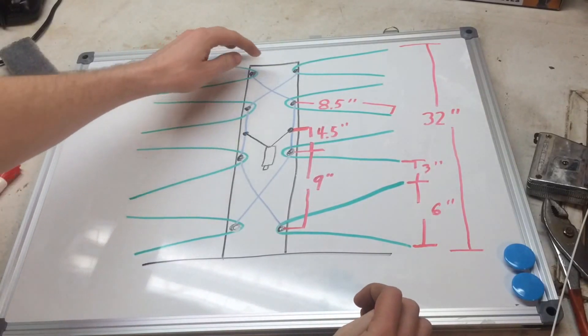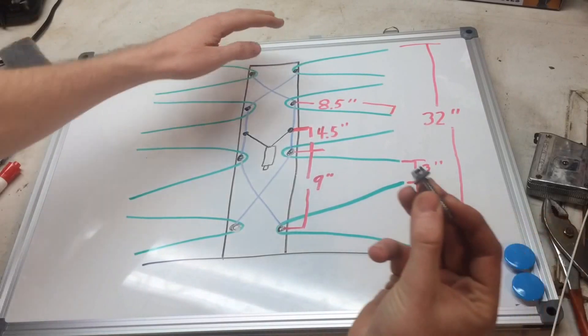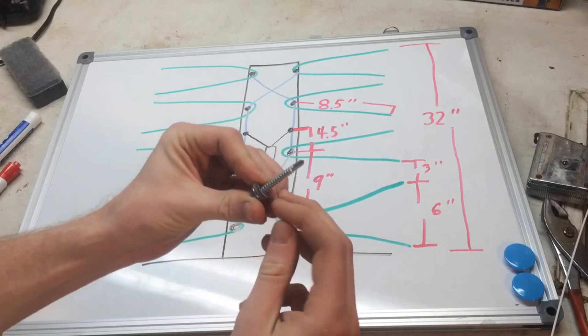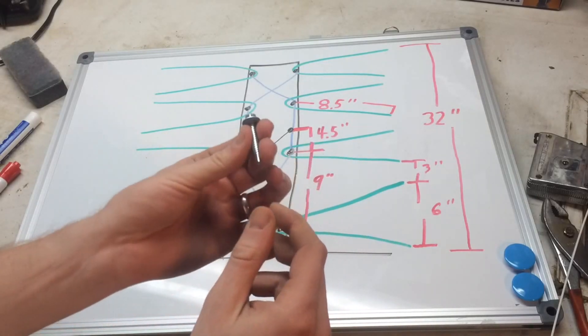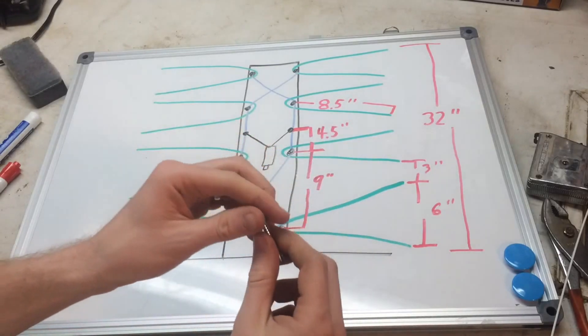Then I took some screws—these are sheet metal screws. They have a little rubber washer underneath it already. I had some of these laying around from where I did a tin job, but if you just want to use some screws with washers, that will be fine as well.